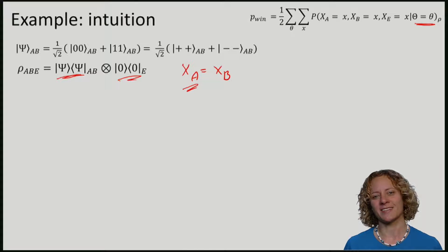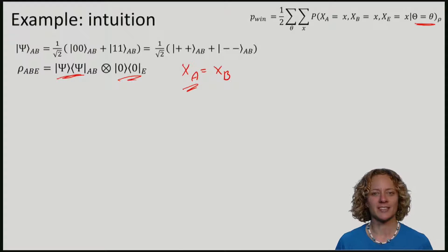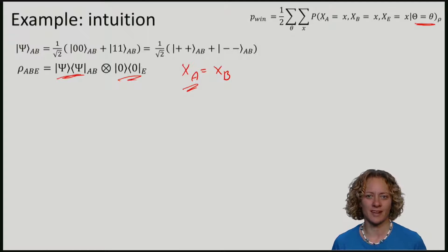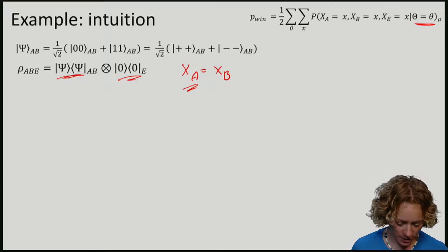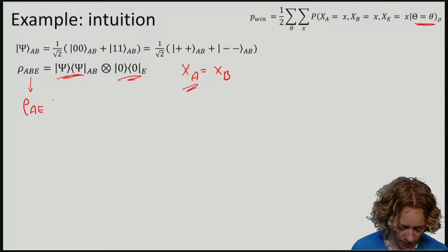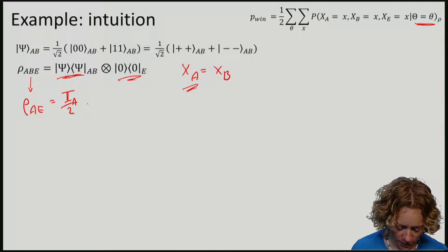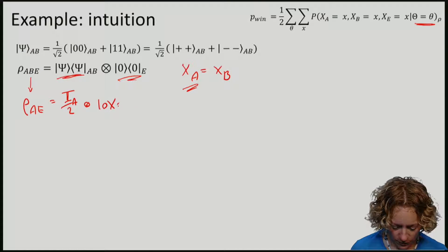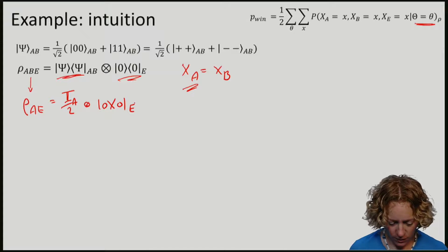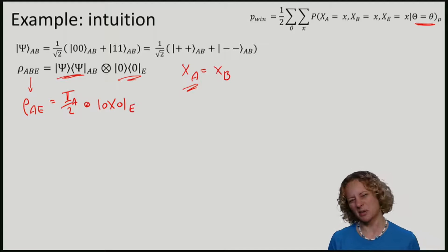Note that the state is such that actually Eve is completely uncorrelated from the state that Alice has. So if I compute the partial trace to obtain ρ_AE, we have the maximally mixed state on Alice's qubit tensor zero. So Eve is completely ignorant about A.